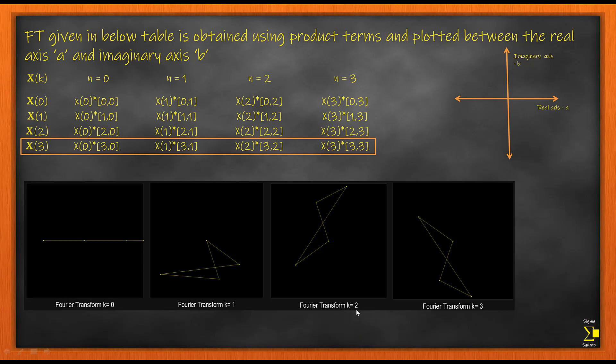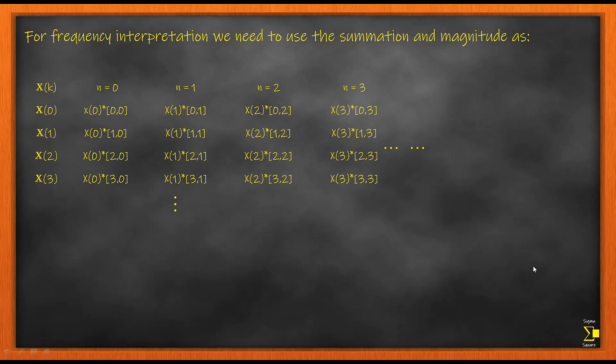k equal to 0, k equal to 1, k equal to 2, and k equal to 3. For frequency interpretation we need to use both product and we need to take the magnitude as well, like shown here.